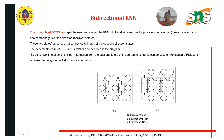The principle of BRNN is to split the neurons of a regular RNN into two directions: one for the positive time direction and one for the negative time direction. The backward states are separate, and those two states' outputs are not connected to the inputs of the opposite direction states. The general structure of RNN and BRNN can be seen from the diagram.